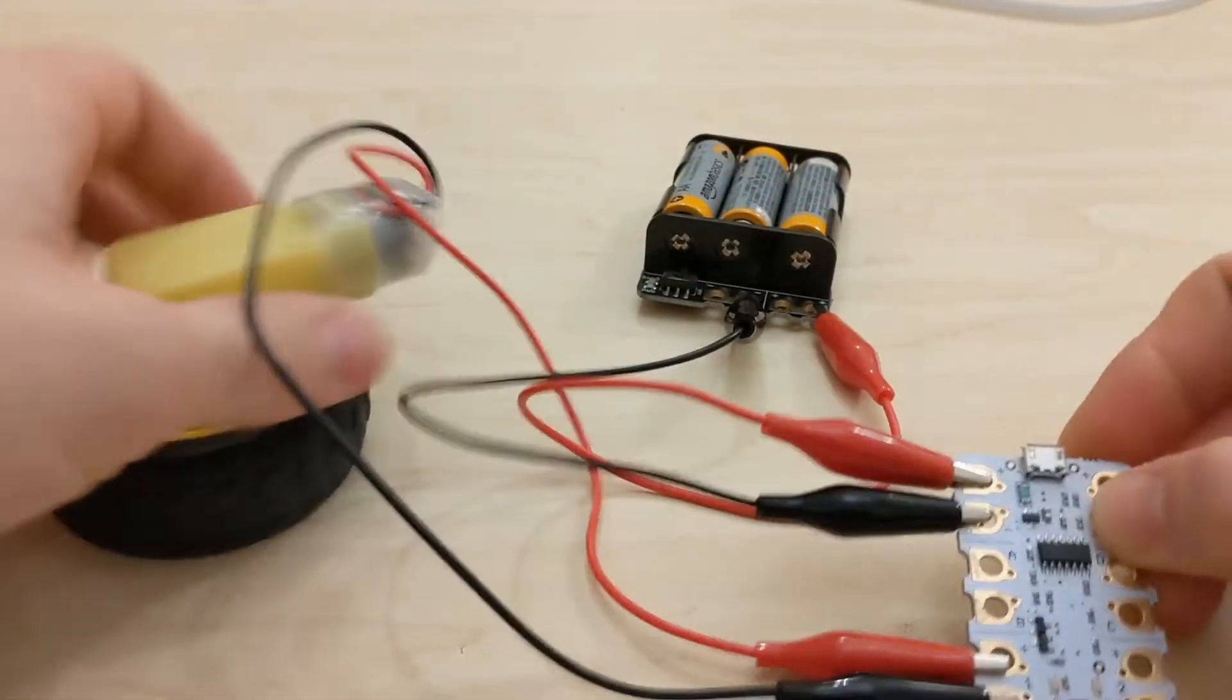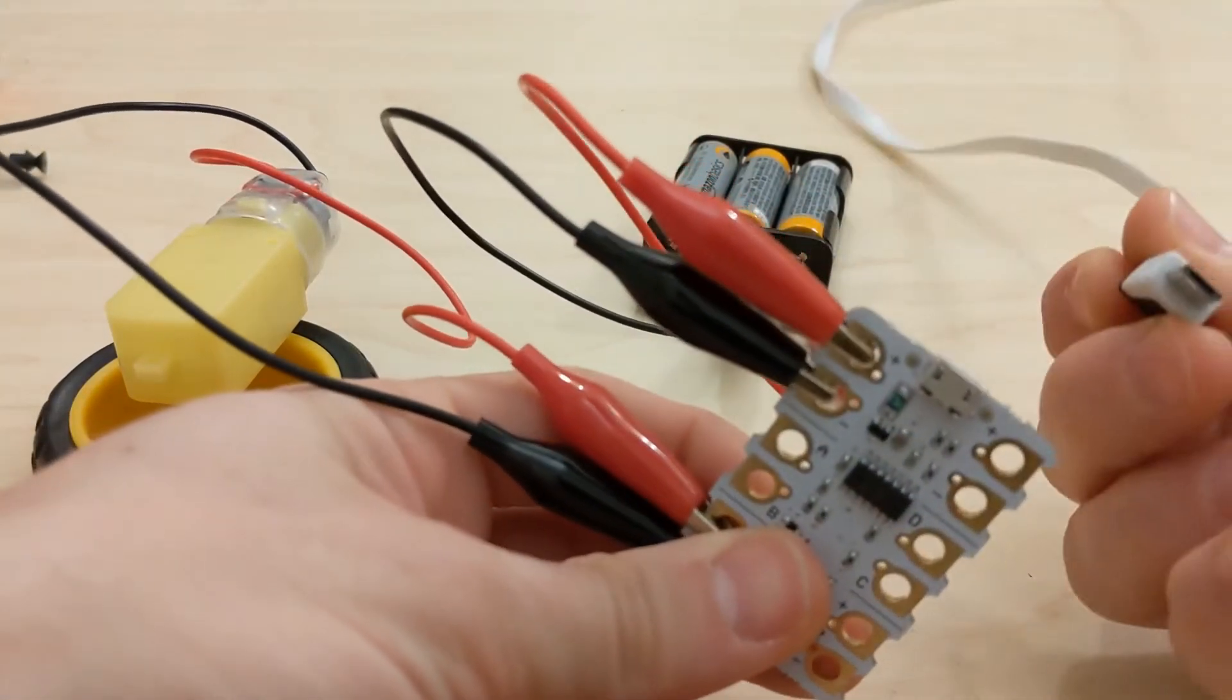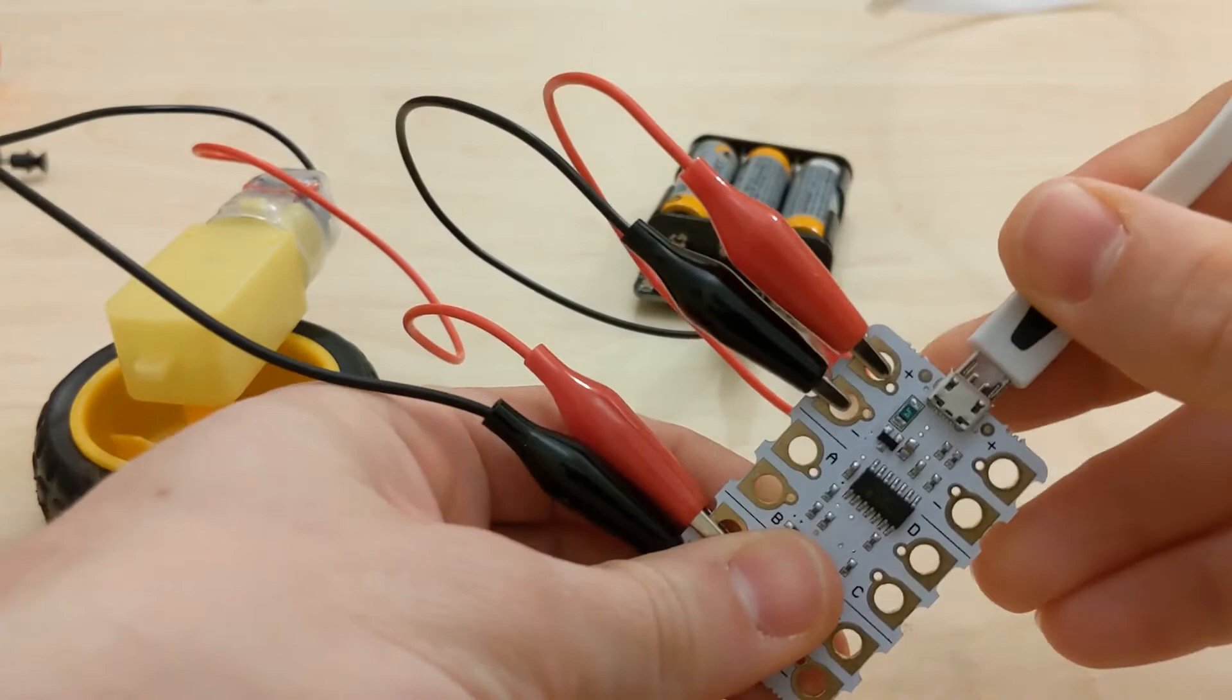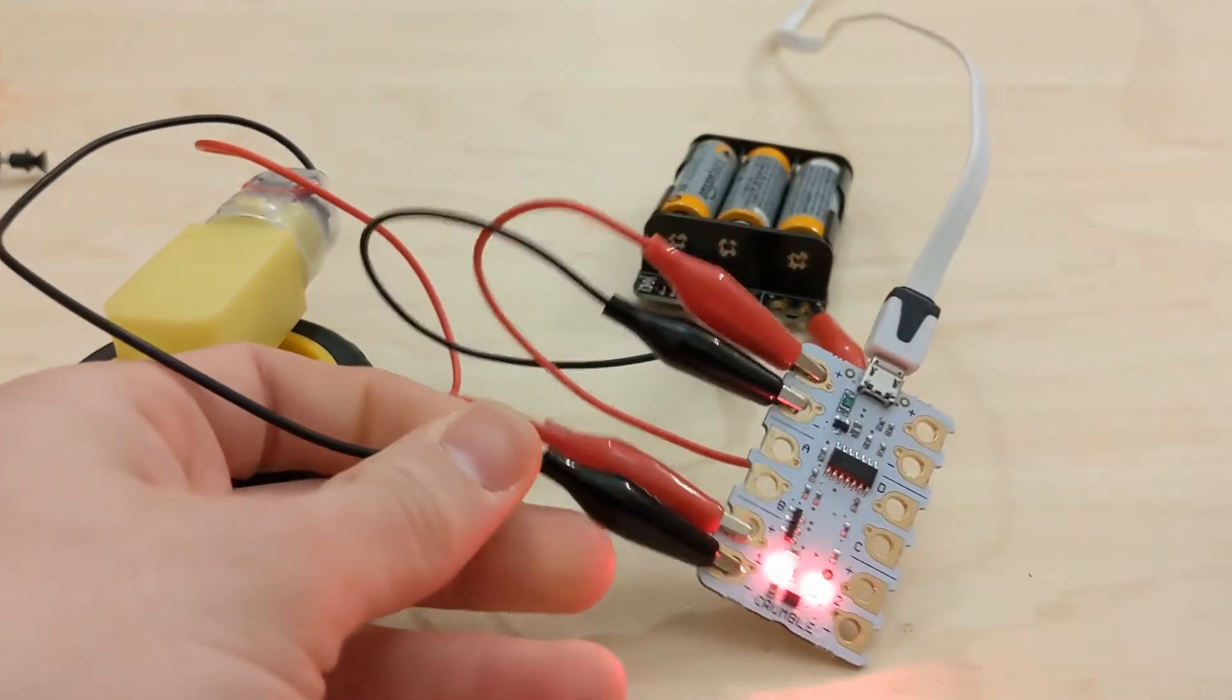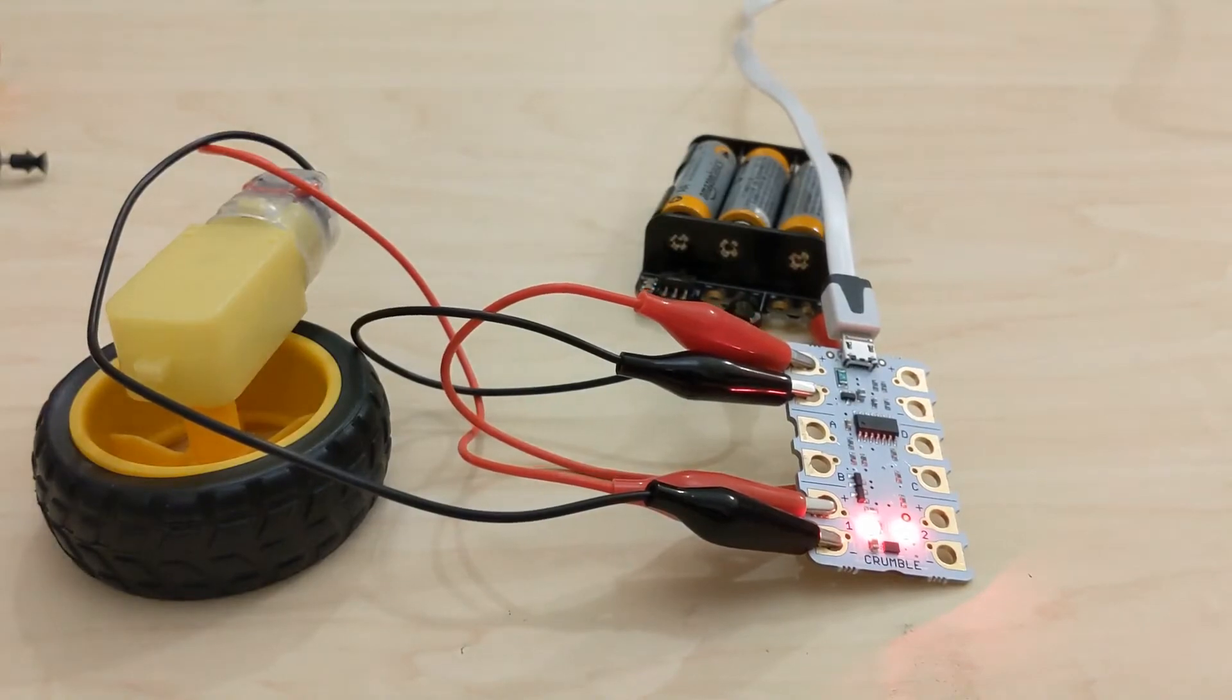Now we're powered up. The next thing we're going to need to do is start controlling it. So plug in our USB cable, let's swap across to the IDE on the computer and have a look at the different blocks we can use.